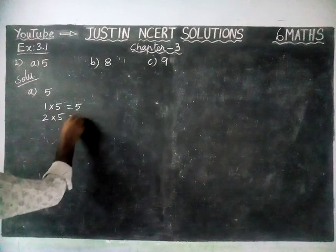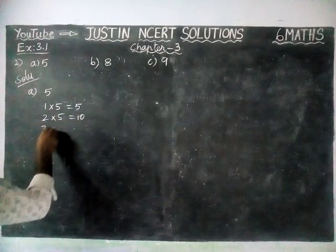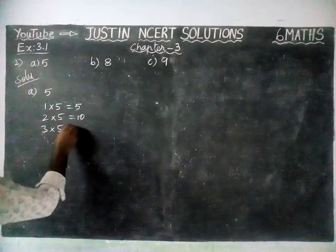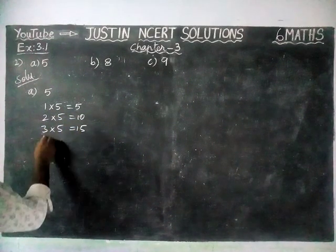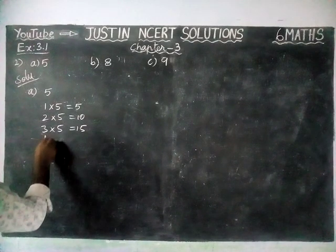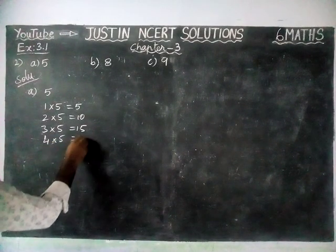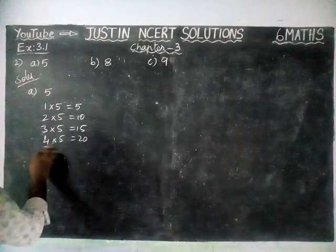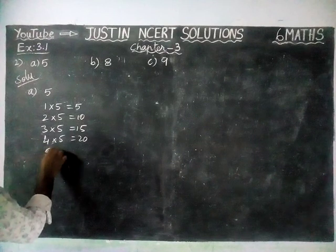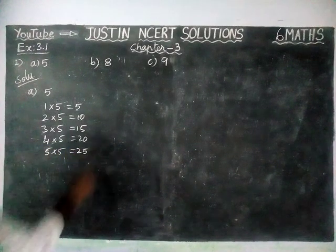2 fives are 10, 3 fives are 15, 4 fives are 20, 5 fives are 25.